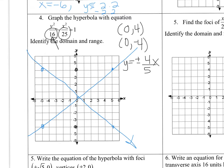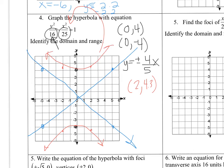To get a more exact curve, plug in x equals 2. Solving gives y approximately equal to 4.3. Using symmetry, this yields four points: (2, 4.3), (-2, 4.3), (2, -4.3), and (-2, -4.3) — since taking the square root gives both positive and negative values. Use these four points to guide drawing the hyperbola more accurately.